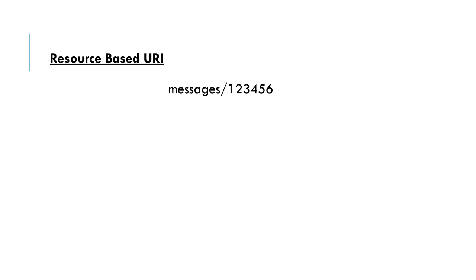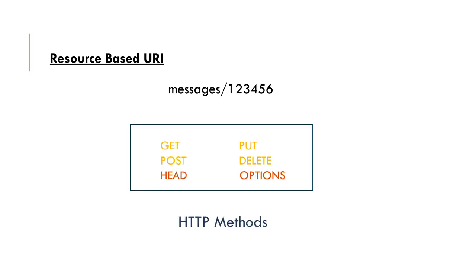Now you are aware that whatever URLs or URIs we use in REST web services, they are resource-based. Like this URI — collections/messages/123456 — is referring to a message in the collection of messages whose ID is 123456. So if we want to perform various actions, like retrieve messages from the server, update, create a new message, or delete it, what are the various options or methods available?